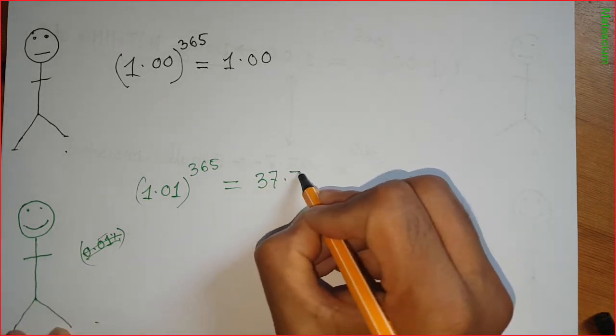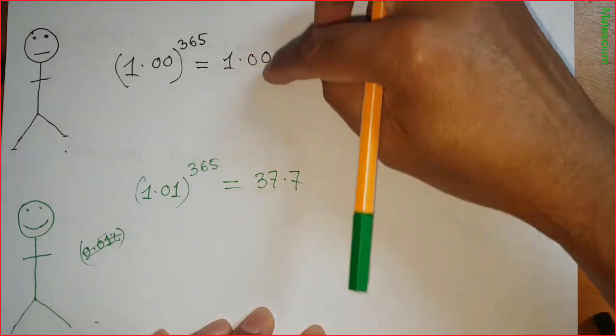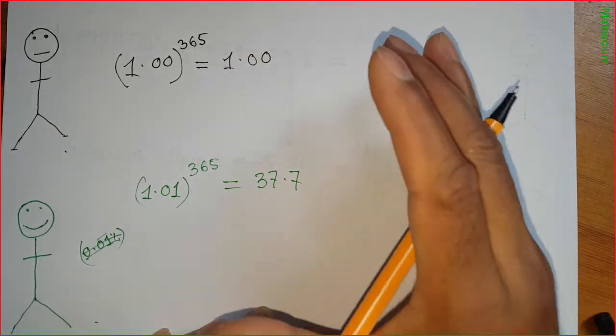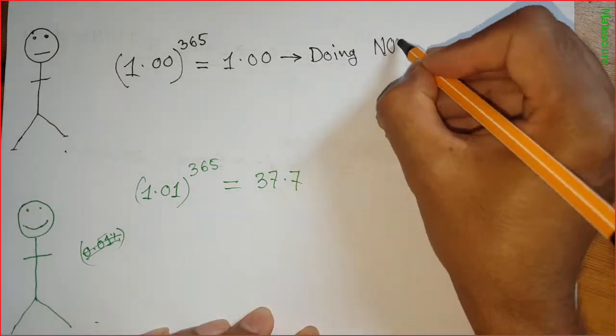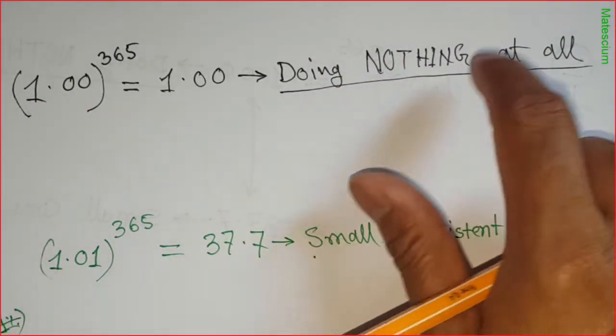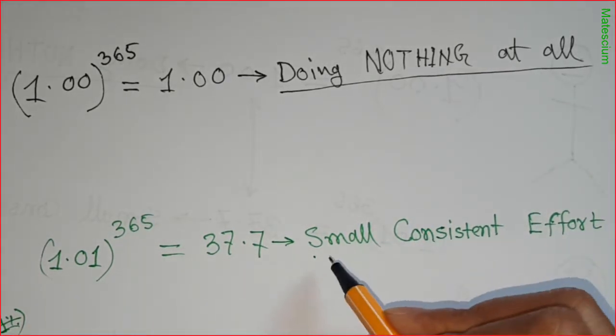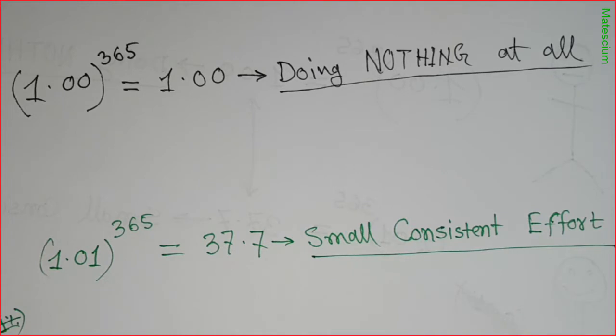Look at the result of this guy and that guy - they have huge difference. What's the reason behind it? This mathematical statement resembles doing nothing at all, and this mathematical statement resembles doing small consistent effort.